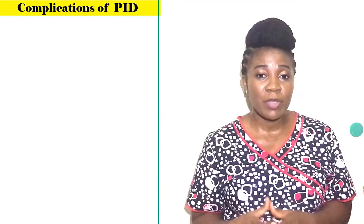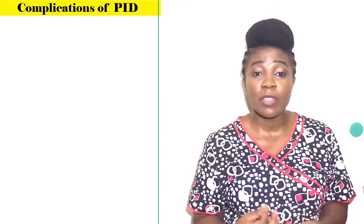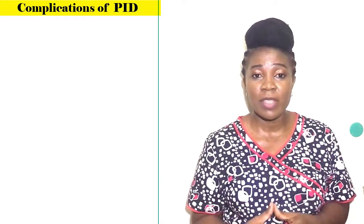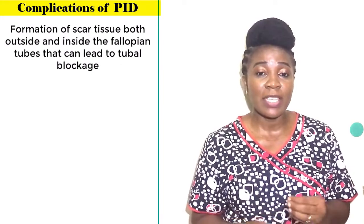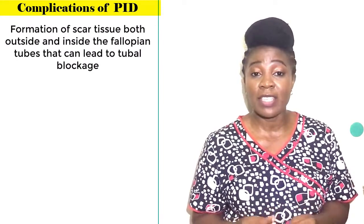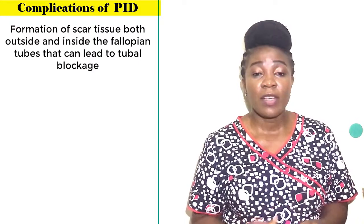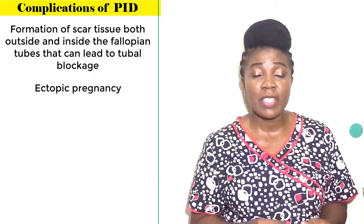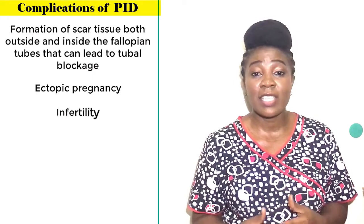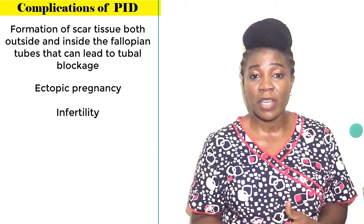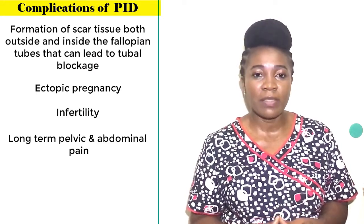If you don't get treated, you may develop complications. Some of these complications are: formation of scar tissue both outside and inside the fallopian tubes that can lead to tubal blockage, ectopic pregnancy — that's pregnancy outside the womb — infertility, which is the inability to get pregnant, and long-term pelvic and abdominal pain.